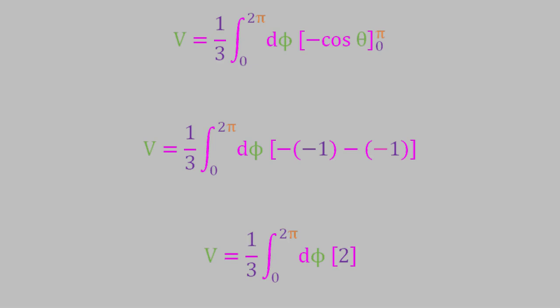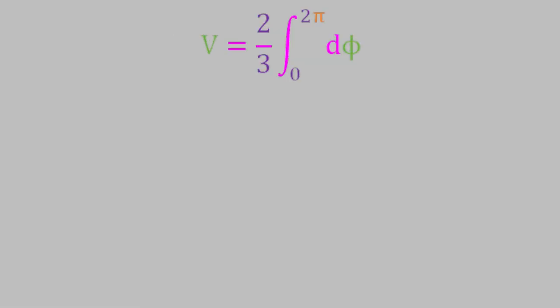Once again, we can factor that out of the integral. And that leaves us with our third and final integral, which is simply the integral of d phi from zero to two pi. The solution to that integral is just phi, with limits of zero and two times pi. That gives us two pi for the answer to our last integral. And gives us a final answer of four-thirds times pi.